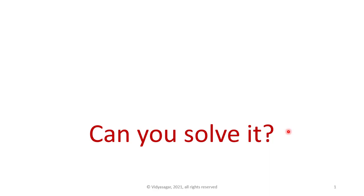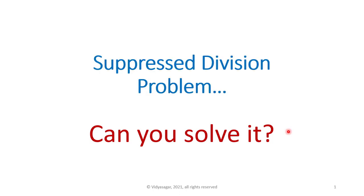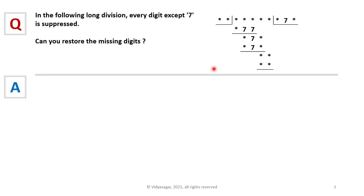Hello friends, welcome to the channel Can We Solve It. In this video we're going to solve a suppressed division problem. The problem is in a long division, every digit except 7 is suppressed. We need to restore the missing digits represented by these stars.